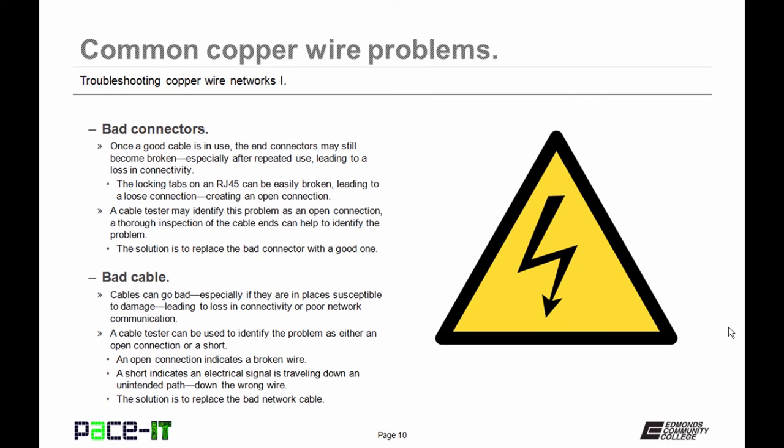Bad connectors are also a common problem on copper wire networks. Once a good cable is in use, the end connector may still become broken, especially after repeated use, leading to a loss in connectivity. In particular, this can happen on RJ45s.